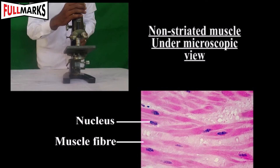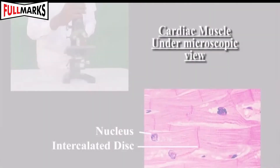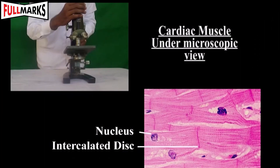Non-striated muscles are found in blood vessels and in the alimentary canal. Cardiac muscle cells are long, branched, and uninucleate. They show alternate light and dark bands, are involuntary muscles, and are seen only in the walls of the heart. They are non-tiring muscles responsible for rhythmic contraction and relaxation.